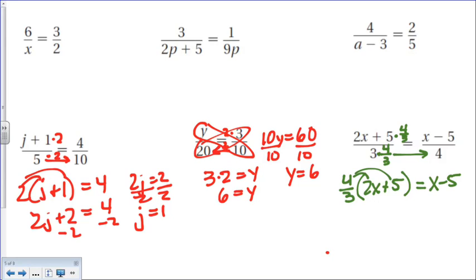If I distribute, I get 6 over 3x plus 20 over 3 equals x minus 5. Okay, 6 thirds x, doesn't that become 2x? Plus 20 over 3 equals x minus 5.